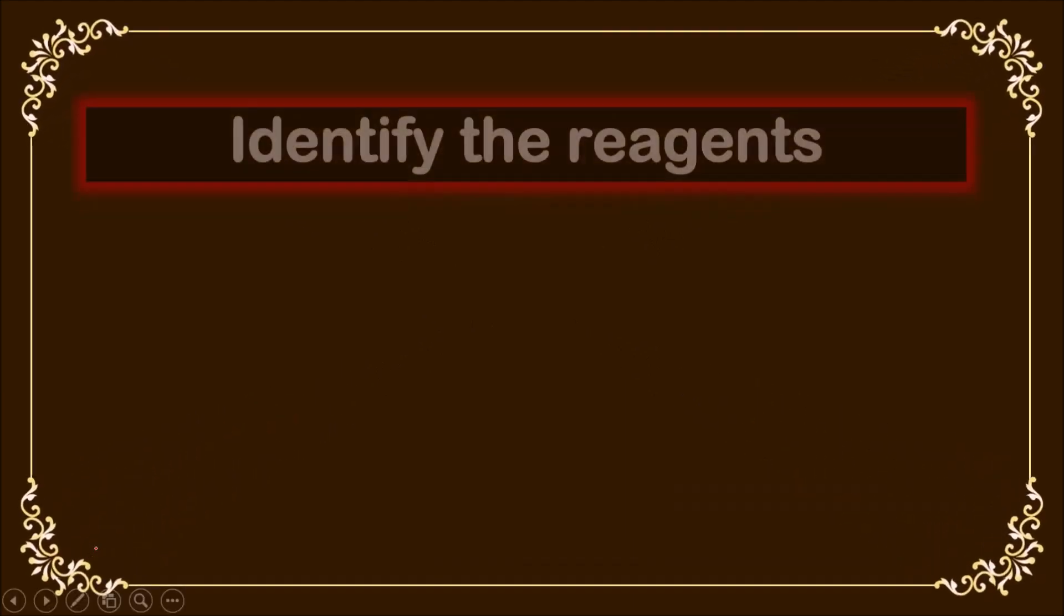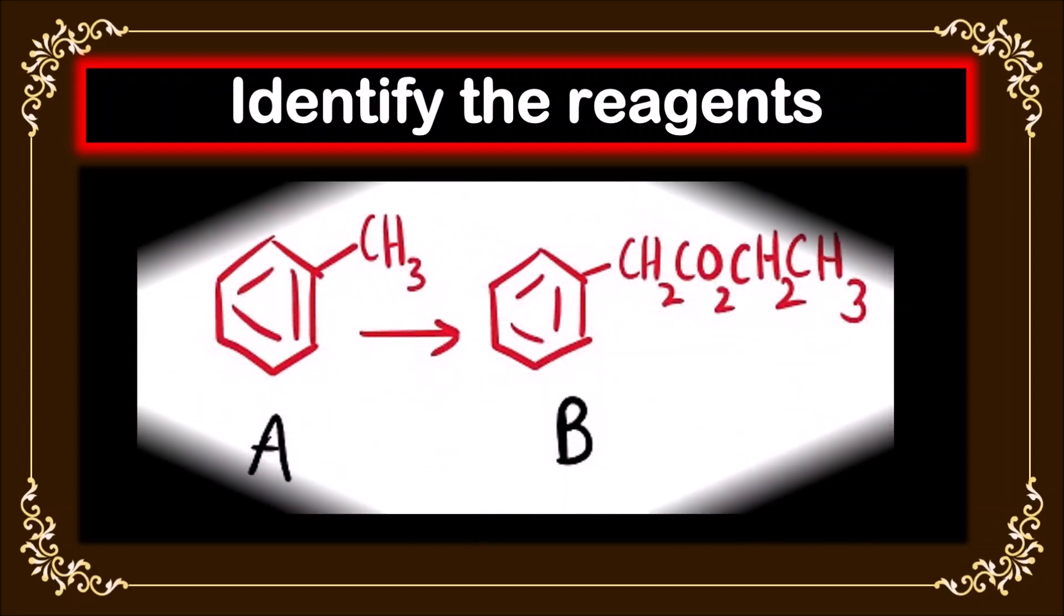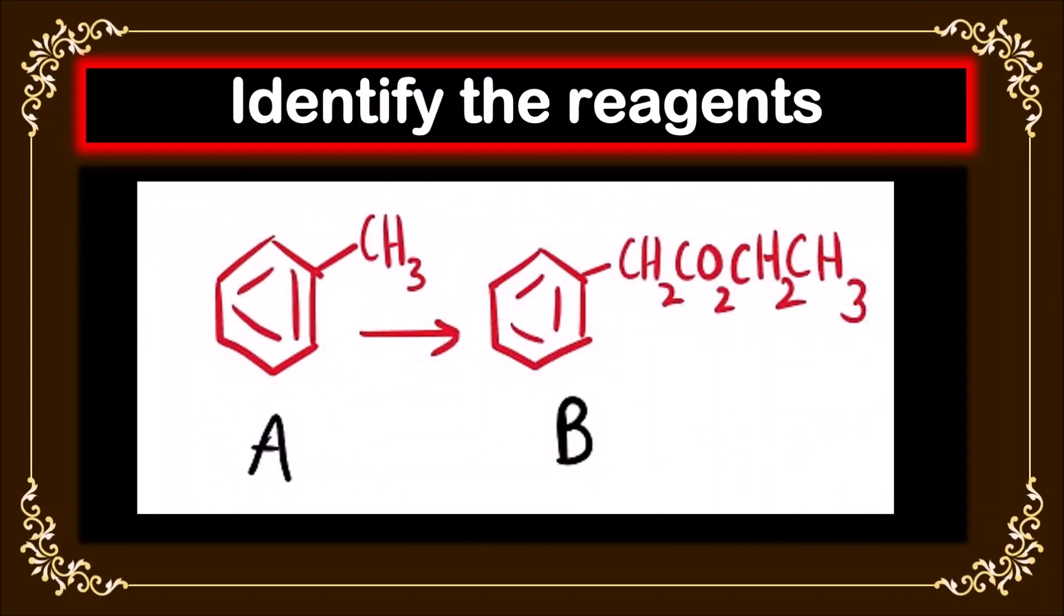Hello everyone. Welcome to Chemezon Complete Chemistry. In today's video, we are going to solve another question of the difficult question series. The reactant is given as A, and we have to form the product B. This is the target molecule.